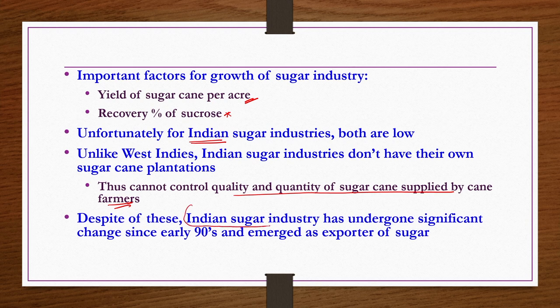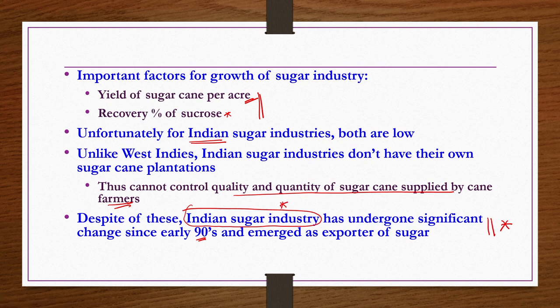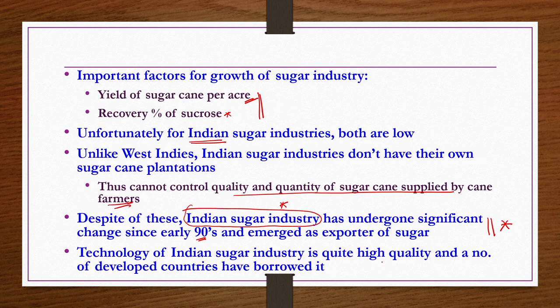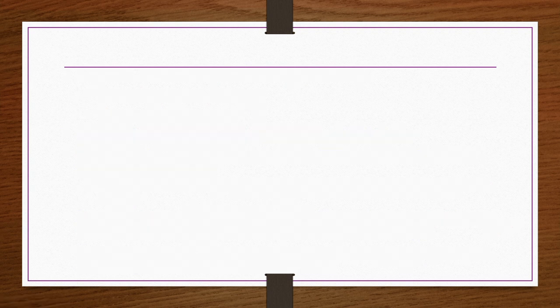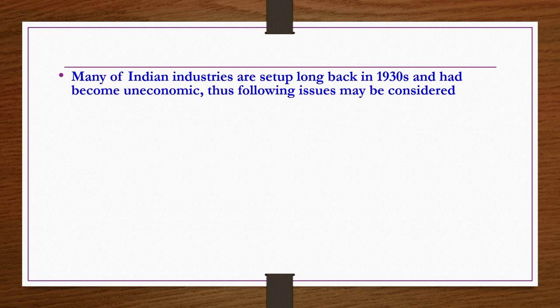Despite these challenges, Indian sugar industry has undergone significant change since the early 1990s and has emerged as an exporter of sugar. Indian sugar industry technology is also quite high — a number of developed countries have borrowed technology from India — though there is still a lot of scope for improvement.